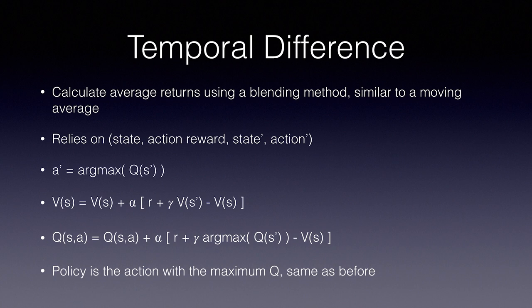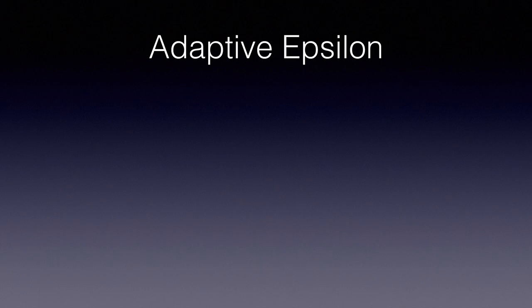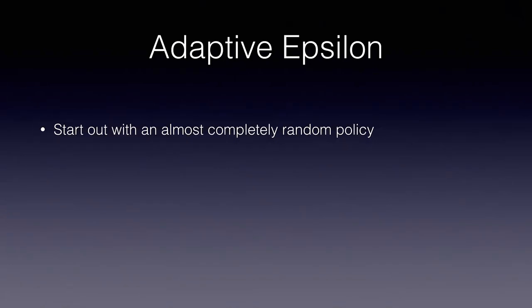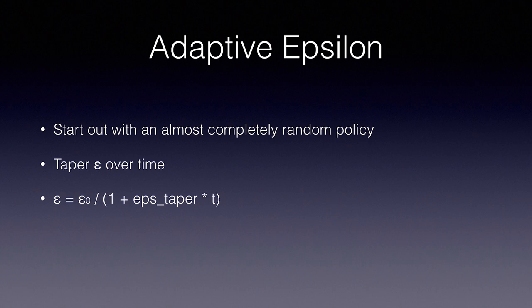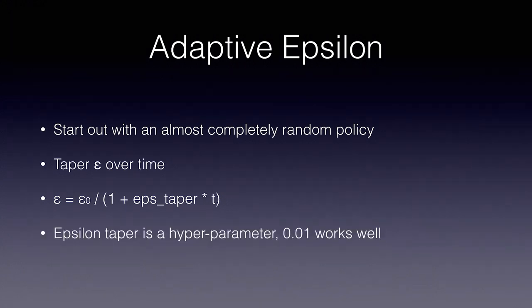The first one is called adaptive epsilon. Now, remember, epsilon is a probability of taking a random action in any given step. Our values can converge faster if we taper or lower epsilon over time. We start out with an almost completely random policy. We taper epsilon over time using the formula: the new epsilon equals the starting epsilon divided by 1 plus epsilon taper times the step number we're in. This way it will approach 0 but never reach 0. Epsilon taper is a hyperparameter to tune. Around 0.01 seems to work very good for this task.